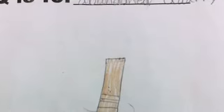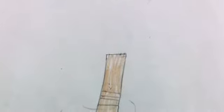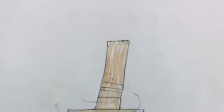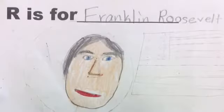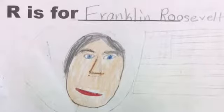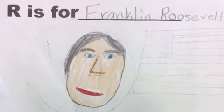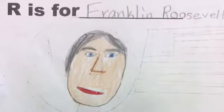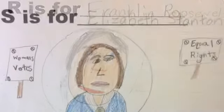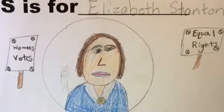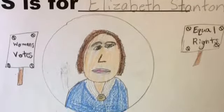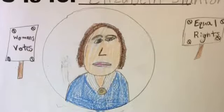Q is for Abandoned Quarry because a quarry is a place where slate or stone is cut. R is for Franklin Roosevelt because Franklin Roosevelt was our 32nd president. S is for Elizabeth Stanton because she fought for the same rights as men.